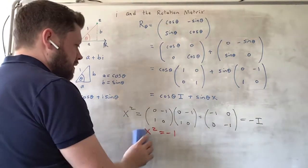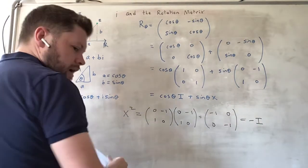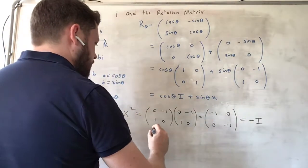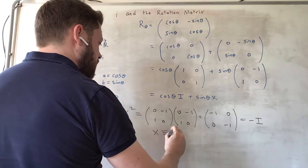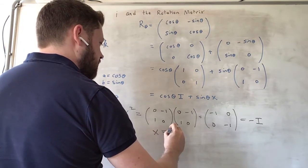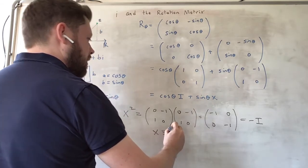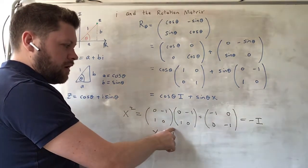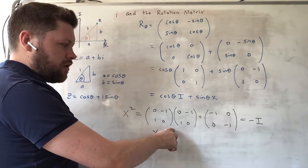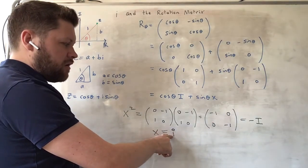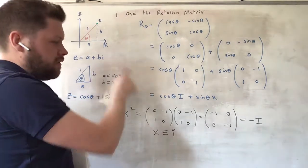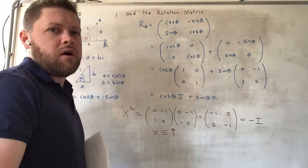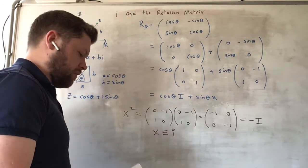So we can say that X here, this matrix X, is equivalent to a kind of matrix imaginary number. So I'm going to denote that with an I with a large circle on top, meaning that this is not the imaginary number i, this is a matrix that's equivalent to i, or multiplication by i.